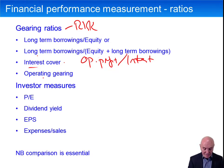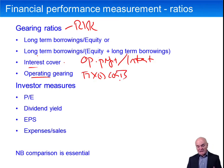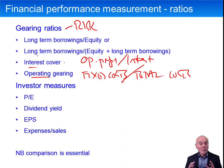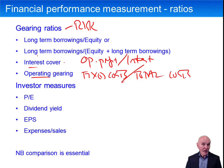Similarly, operating gearing looks at fixed costs. Various ways of looking at it: fixed costs as a proportion of total costs, or sometimes fixed costs over variable costs — it measures what proportion of your costs are fixed. High operating gearing means lots of fixed costs: rent of a factory, rent of shops, employees on fixed salaries, machines being leased that you have to pay for even if idle. If your profit falls just a little bit, it could be very hard to pay the rent, leases, and salaries.